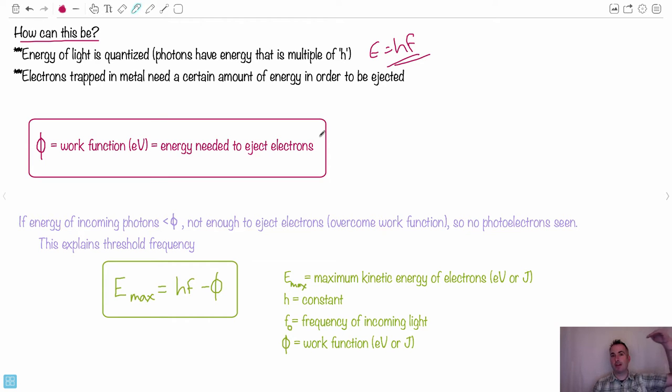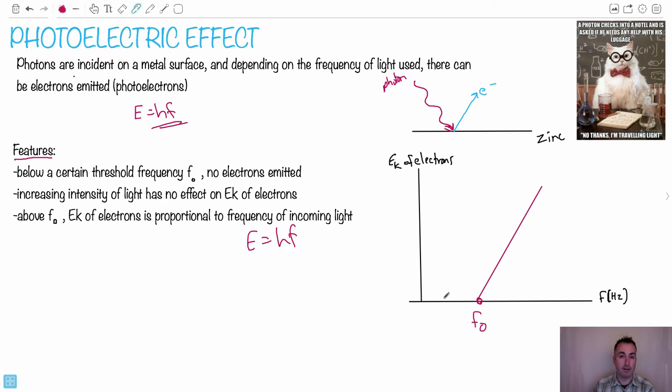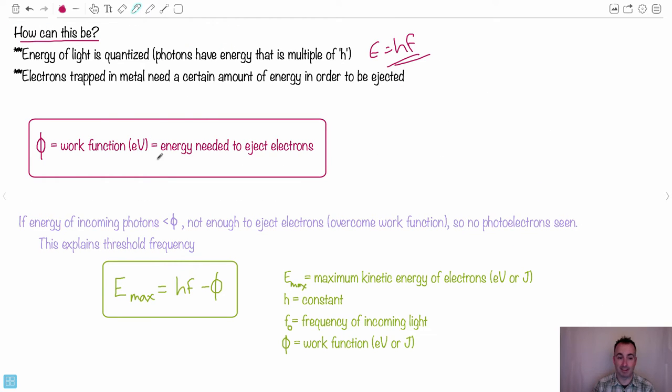So if you think about it, you've got these photons coming in with a certain energy E equals HF. But if they don't have enough energy to overcome this work function, if they come in too low energy, like over here on this graph, those photons don't have enough energy to overcome this work function. It's this amount of energy that's holding those electrons in, so you have to have enough energy to basically force them to be released. That's the brilliant thinking of it. He actually won the Nobel Prize for this. If the energy of the incoming photons is less than this φ, this work function, there's not enough energy to eject the electrons. That's why no photoelectrons are seen. That explains the threshold frequency.